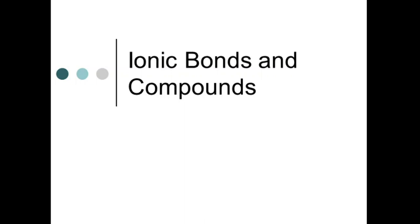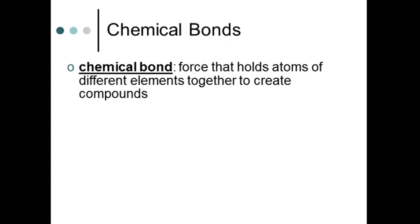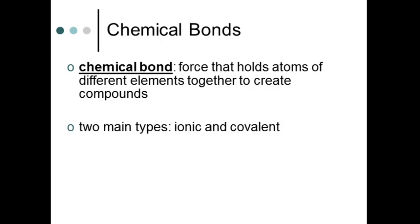A chemical bond is a force that is going to hold together atoms of different elements in order to create compounds. There are two main types of bonding we're going to discuss: the first is ionic bonding and the next is covalent. These two are very different in terms of how elements create that force of attraction, how we write their names, and how we figure out their formulas. But we don't have to worry about covalent bonding yet — this is all about ionic.